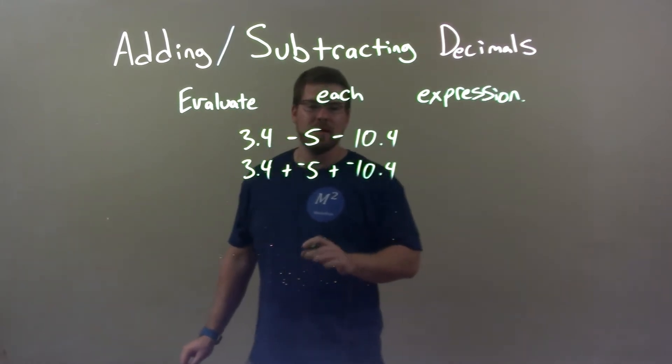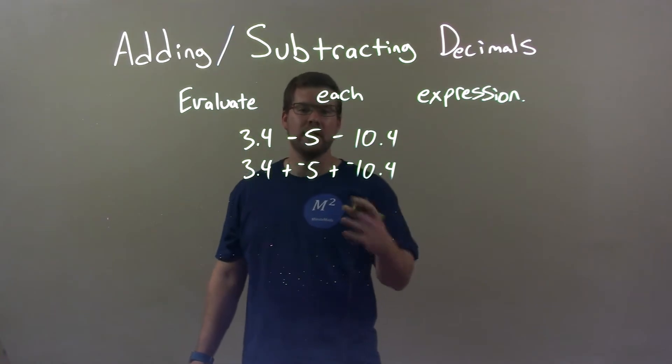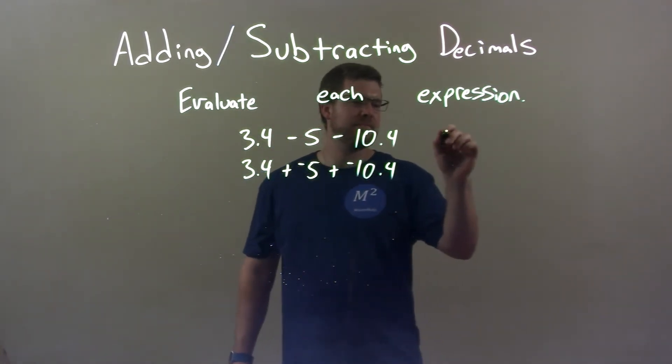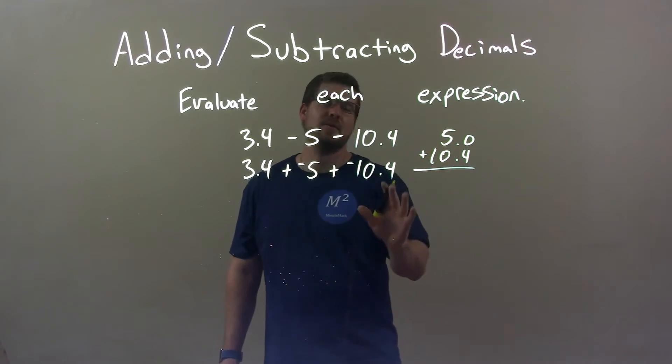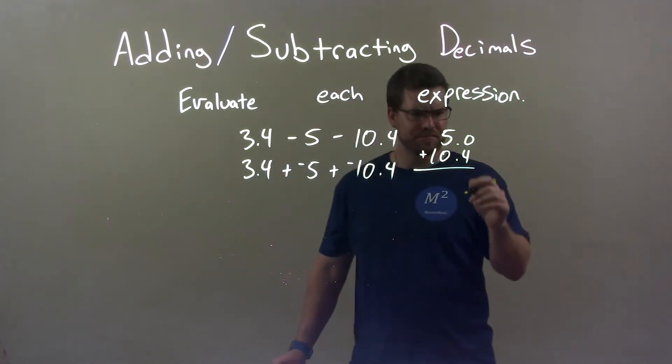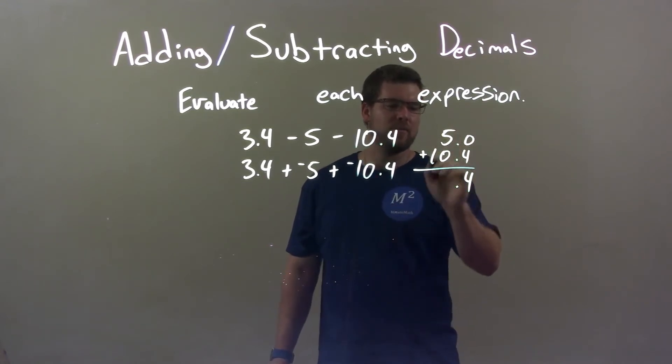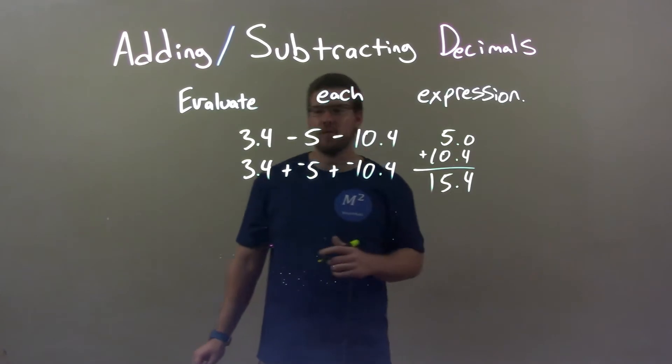What I do is, since these two are both negative when we're adding two together, they're going to be a larger negative. So I'm going to do that on the side. Just 5 plus 10.4. Keep the decimals lined up if you need to. And I imagine they're both positive, but I know it's going to be negative. So 0 plus 4 is 4. The decimal point stays there. 5 plus 0 is 5. 1 comes down. 15.4. Don't forget it's negative.